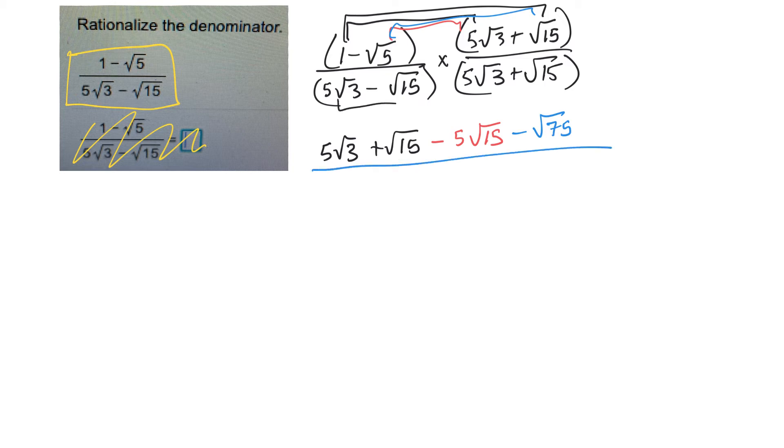Multiply the bottom one. This times this will be 25 root 9. This times this will be plus 5 root 45. This times this will be minus 5 root 45. And lastly, this times this will be minus root 225.